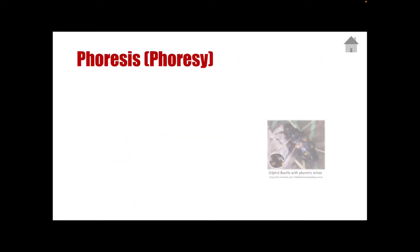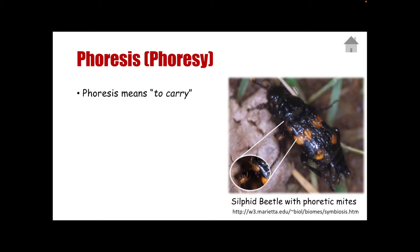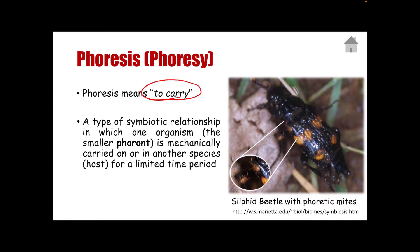Let's take first phoresis, or phoresi. The simple definition of phoresis is to carry — to transport or bring a smaller organism. The larger organism is carrying a smaller organism. This is a type of symbiotic relationship in which one organism, the smaller one — we call it the phoront — is mechanically carried on or in another species, which we call the host. The phoront is carried for just a limited period of time, and the host may incidentally provide shelter or some indirect protection for the phoront.